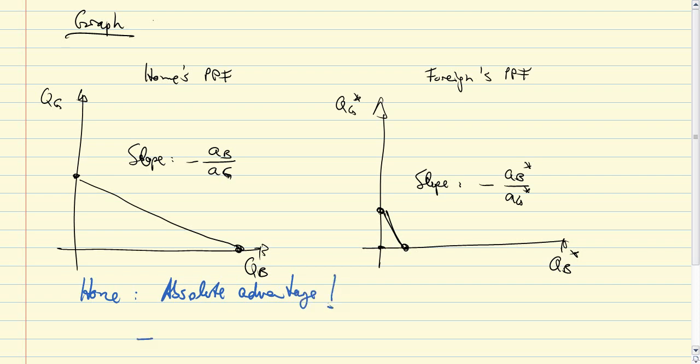So what does that mean? That means that home has apparently an absolute advantage in both sectors. The question that arises then is who has the comparative advantage and how can there be gains from trade if the home country is better at both? So let me just write that down here, comparative advantage. Which country has a comparative advantage in which sector? That's a question.